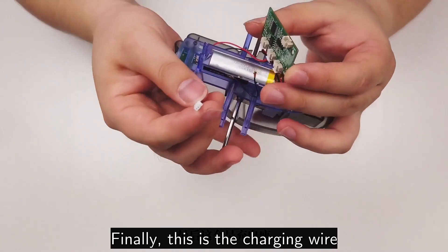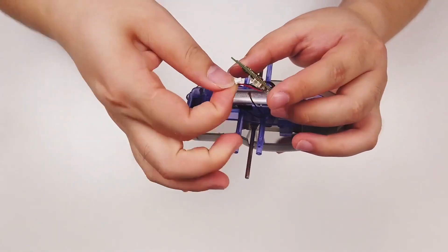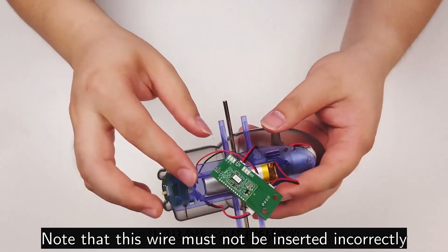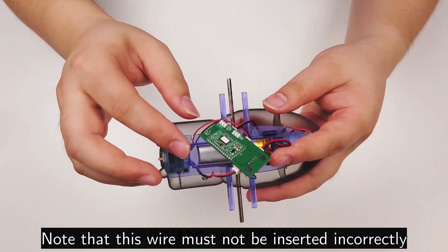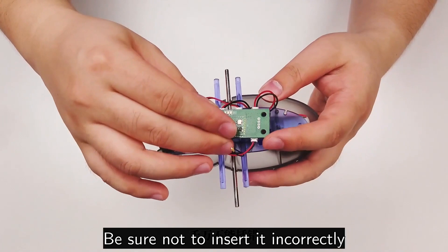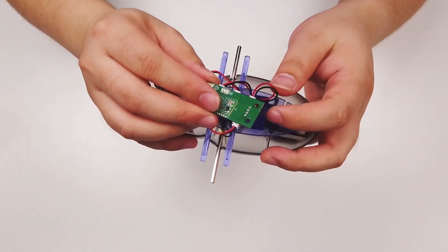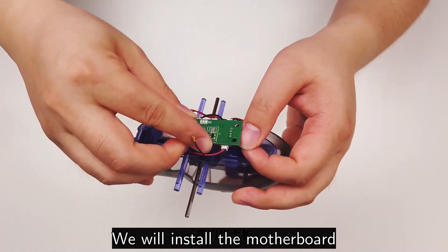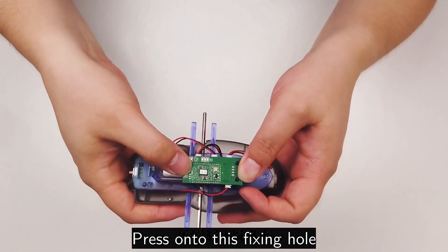Finally, this is the charging wire connected up here. Note that this wire must not be inserted incorrectly. Be sure not to insert it incorrectly. After everything is installed, there are two fixing holes here. We will install the motherboard and press onto this fixing hole. Just press it slightly to secure it.